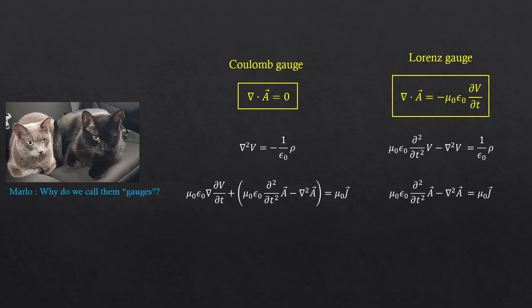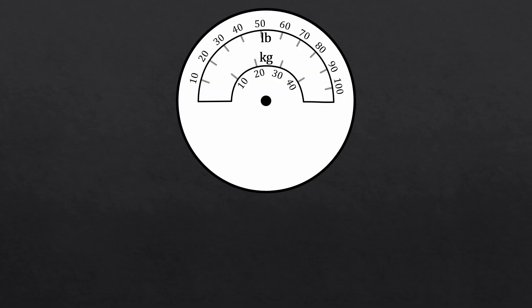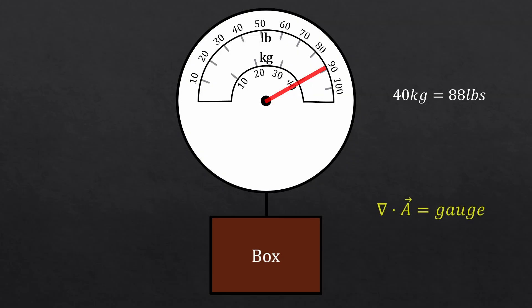Why do we call them gauges? Good question, Marlo. You've seen this before, right? Things that show pressure or a car speed or your weight. This measuring instrument with a dial or scale are called gauges. For example, say this gauge measures the weight of this box. If you want to read in kilograms, you look at the numbers on the bottom. If you want to read it in pounds, you look at the numbers on the top. But whether you're using the pound gauge or the kilogram gauge, the actual weight of the box doesn't change, right? That is the idea. It's just like using different values for the divergence of A, but you're not changing the physics of the field. So that's why they're called gauges. And we say that the electric field and the magnetic field are gauge invariant quantities.